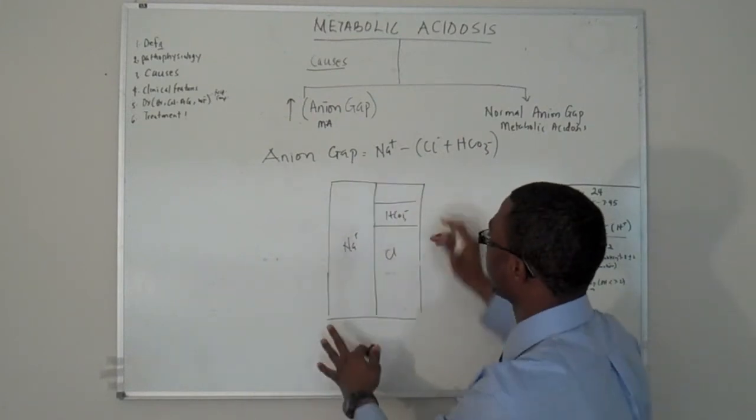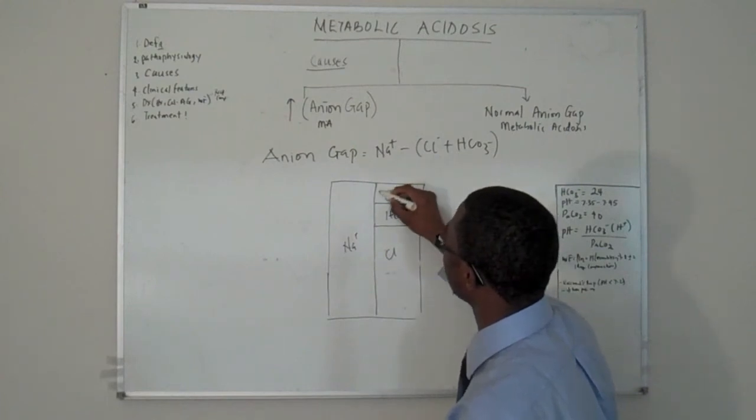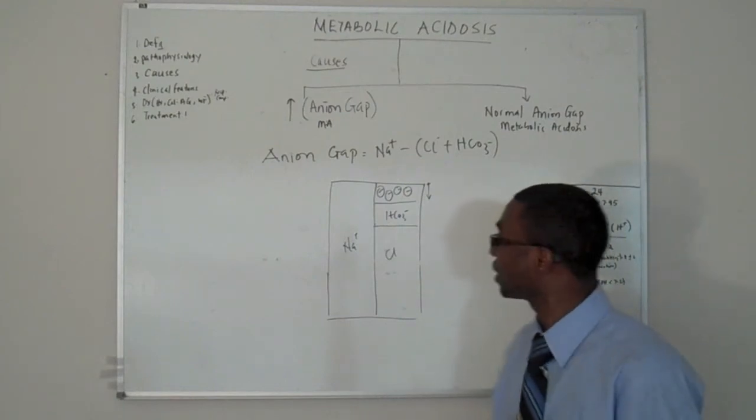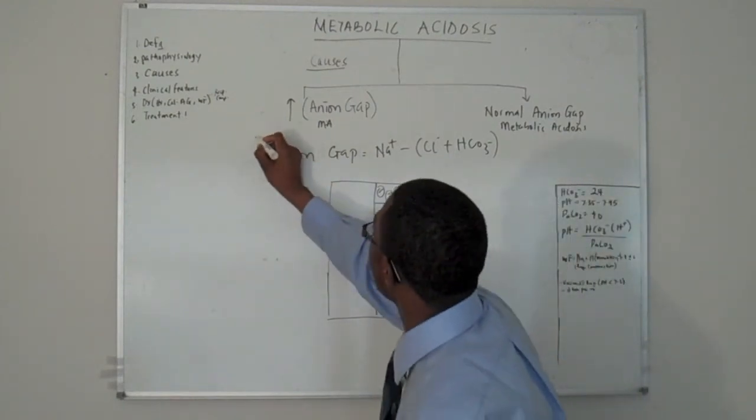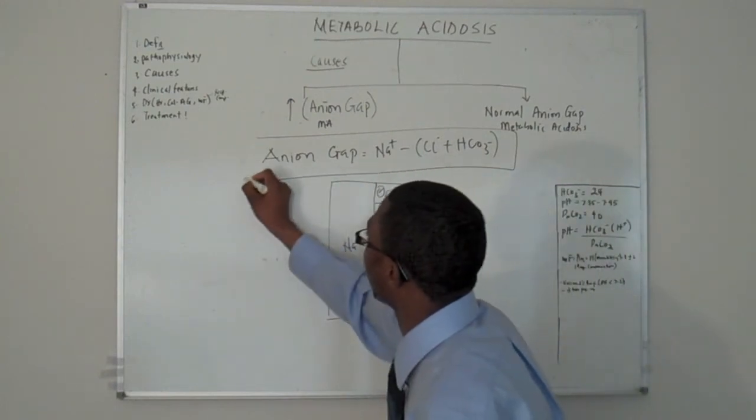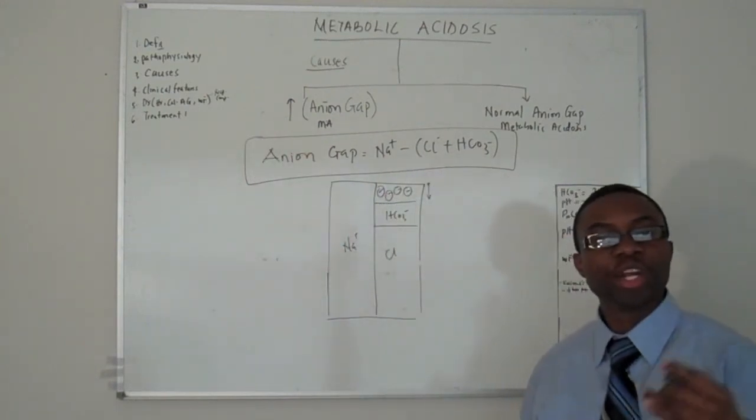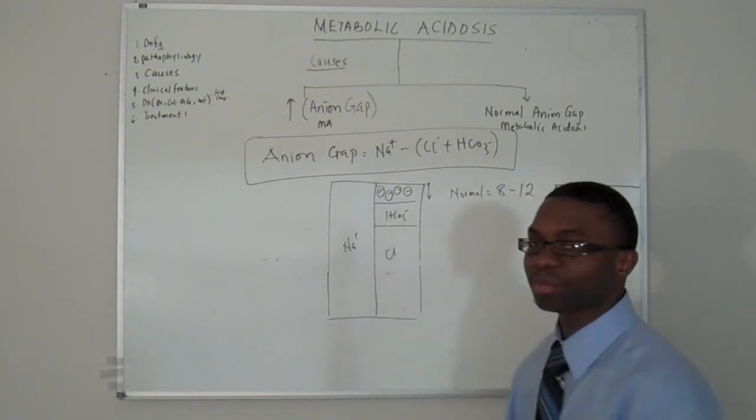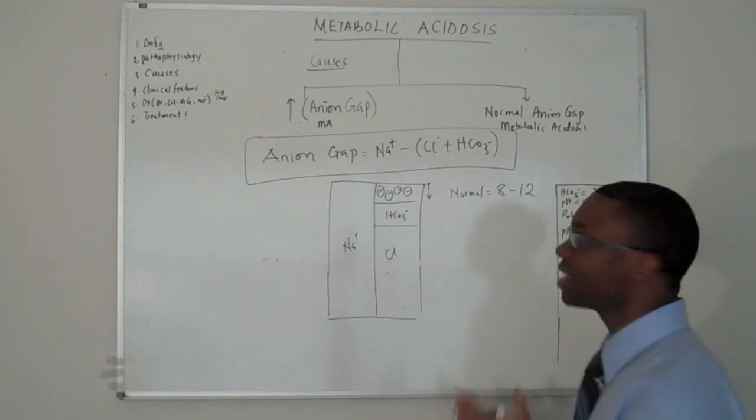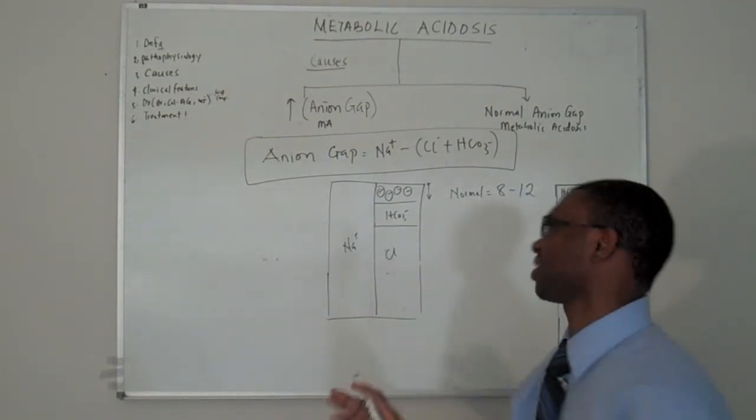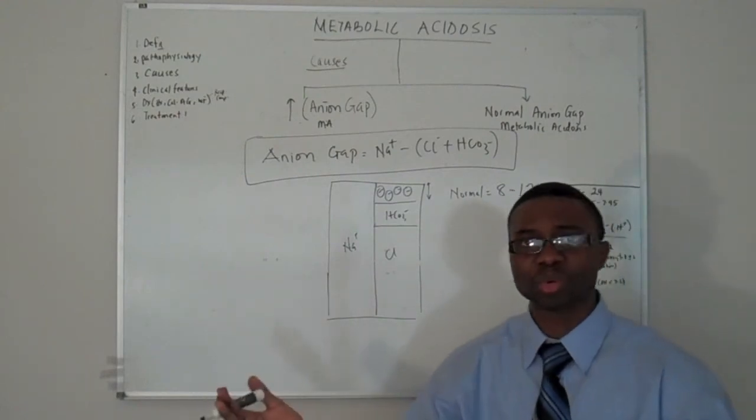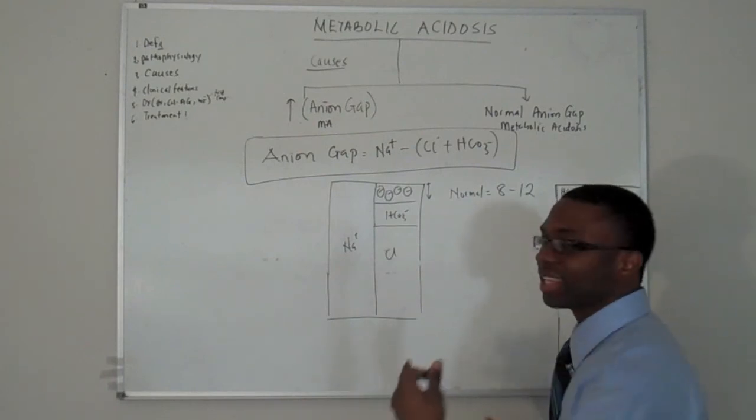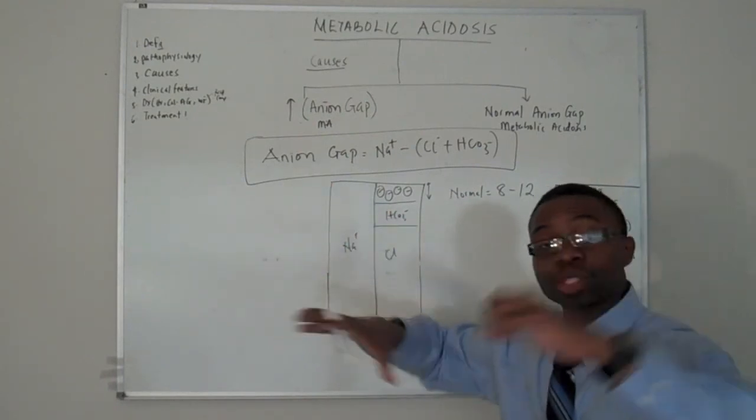What will happen is this. I want you to memorize this formula because it's very important. The normal anion gap, sometimes we say 8 to 12, sometimes 8 to 15. I just stick to one number. I don't like complicated stuff. I pick 12. So let's agree with 12. What they're trying to teach you is, it's either this anion gap can be increased or normal. And I'll tell you exactly what causes an increased anion gap and what causes no anion gap.